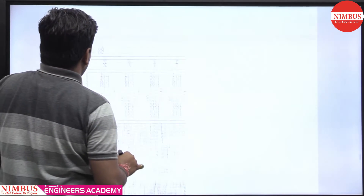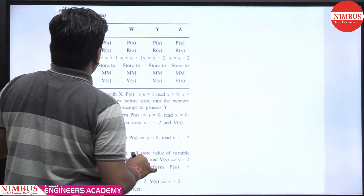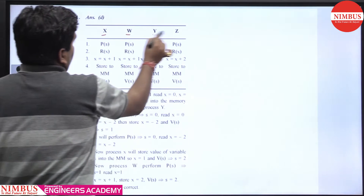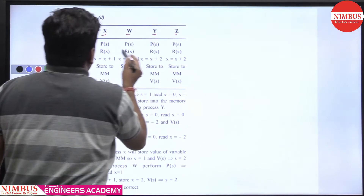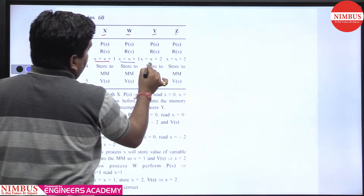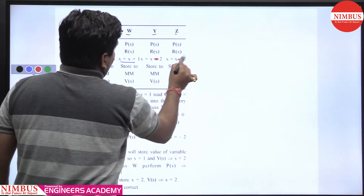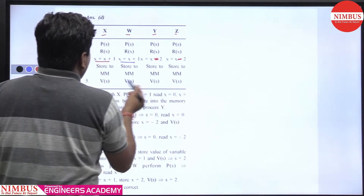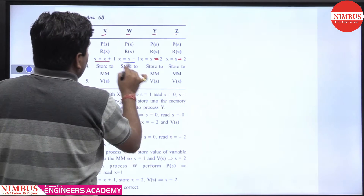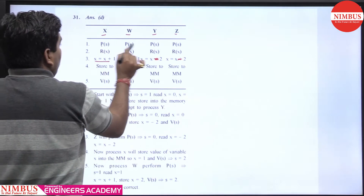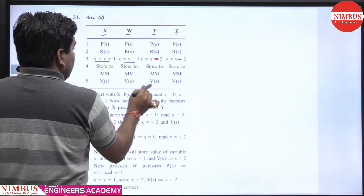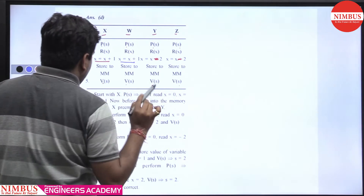Here you can see: there are 4 processes w, x, y, z. w and x are increment processes and y and z are decrement-by-2 processes, storing in main memory. Before reading, they perform the down operation and after storing, they perform the signal operation.